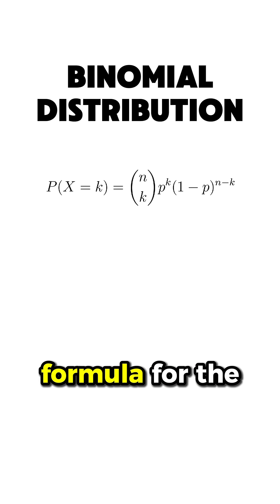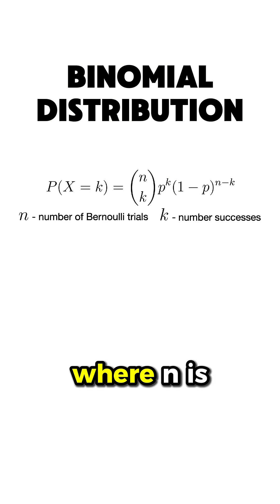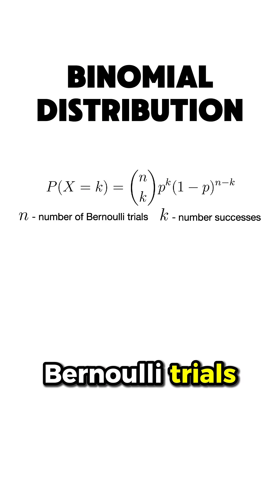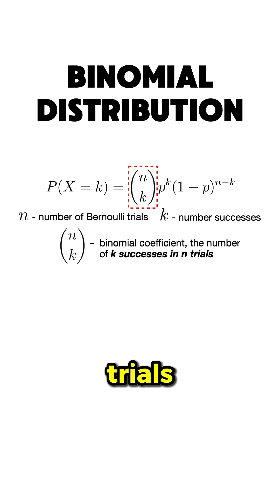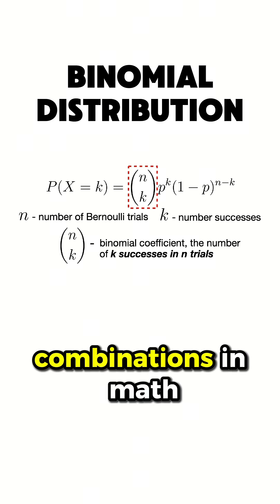The probability formula for the binomial distribution is the following, where n is the number of Bernoulli trials and k is the number of successes, which calculates the number of ways we can arrange k successes among n trials, also known as combinations in math.